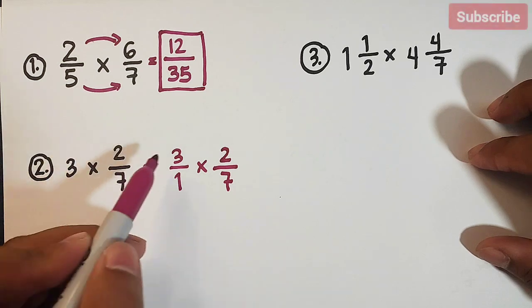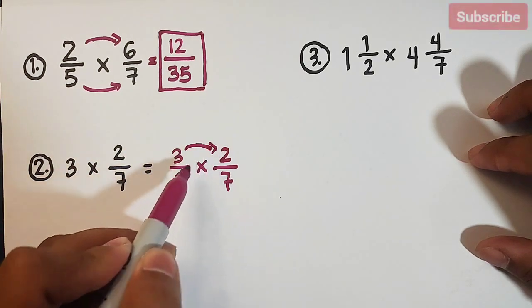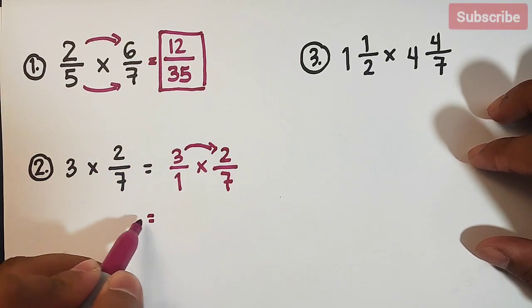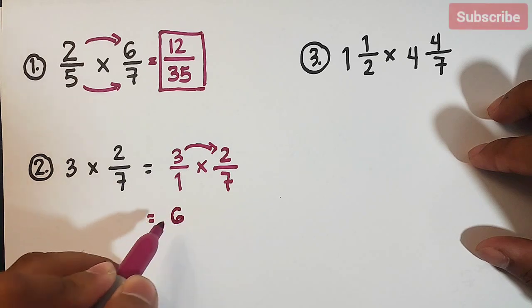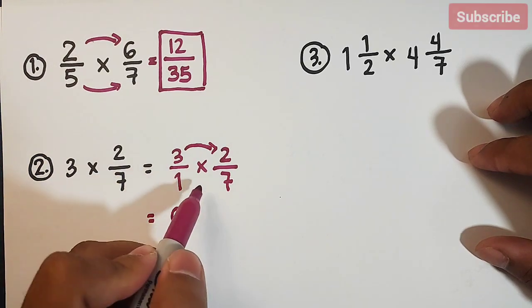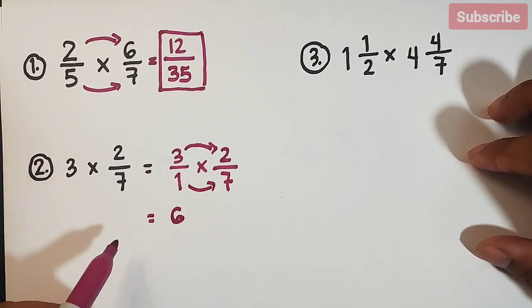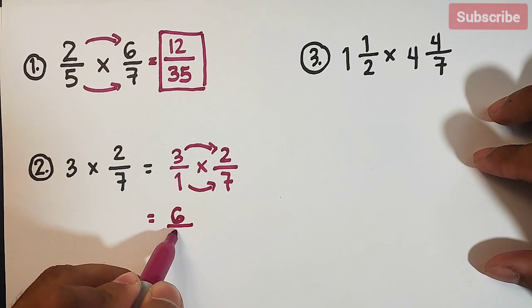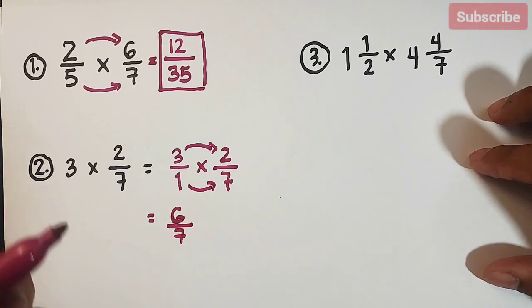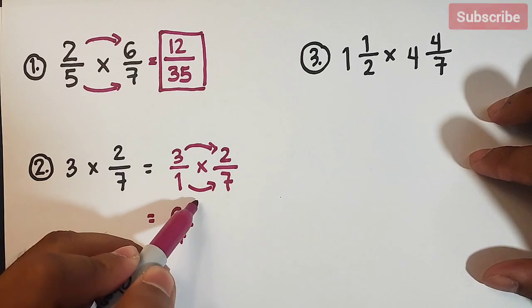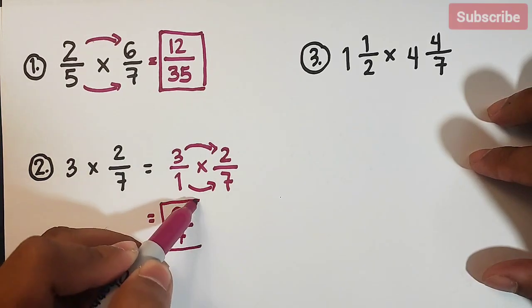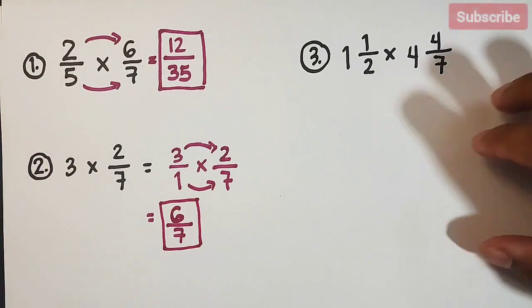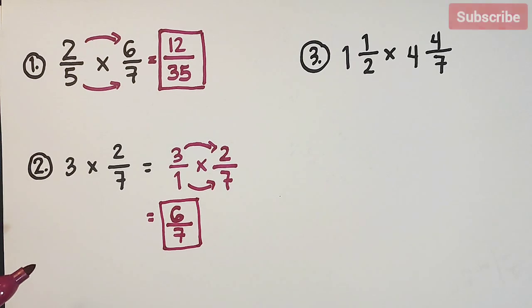So we will multiply them. 3 times 2, that is equal to 6. And for your denominator, 1 times 7, that is equal to 7. And as you can see, this is the final answer. We have 6 over 7 because 6 over 7 is already in simplified form.